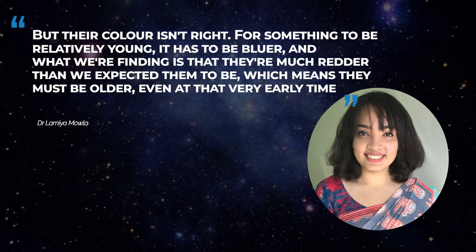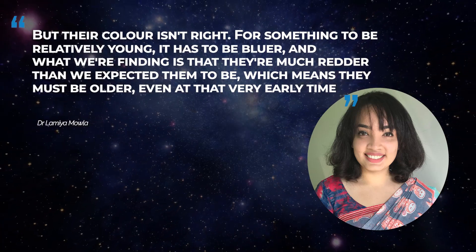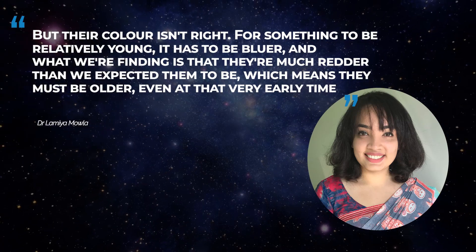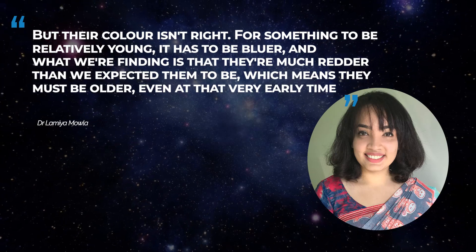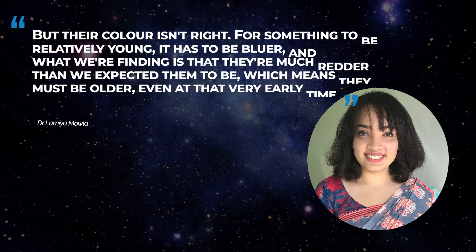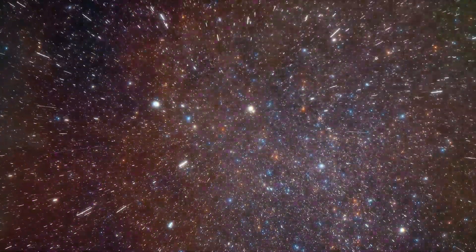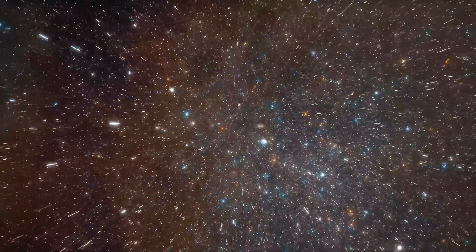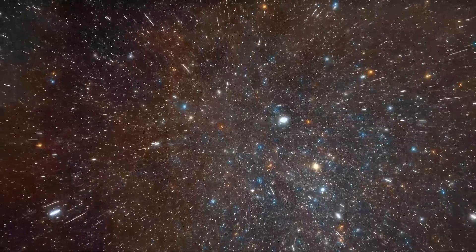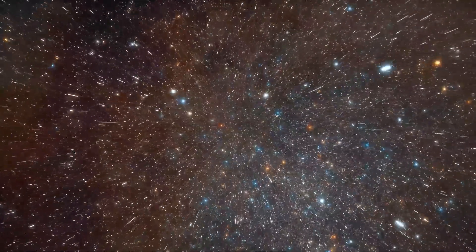For something to be relatively young, it has to be bluer. And what we're finding is that they're much redder than we expected them to be, which means they're much older, even at that very early time. If globular clusters are really old like we think they are, then the answer would be that most globular clusters were formed at dawn and not at noon.